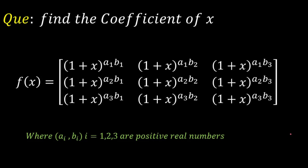Hello everyone. Today we are going to look at a problem from determinants. The question is: find the coefficient of x in the function f(x), where f(x) is given in the form of a 3×3 determinant, and aᵢ and bᵢ, where i varies from 1 to 3, are positive real numbers.